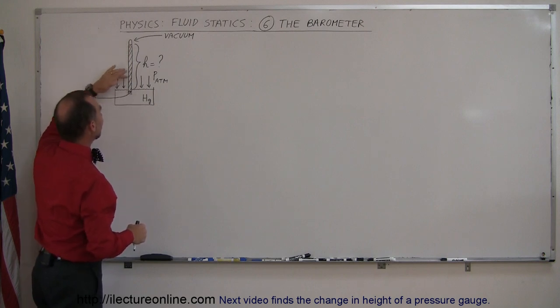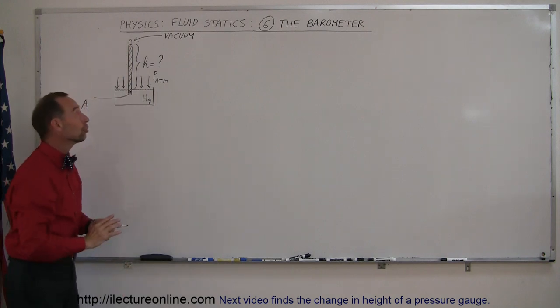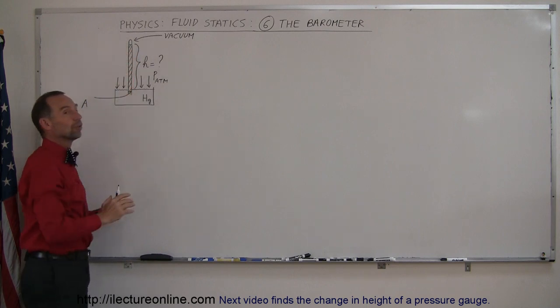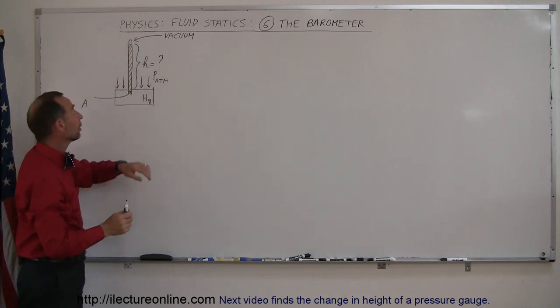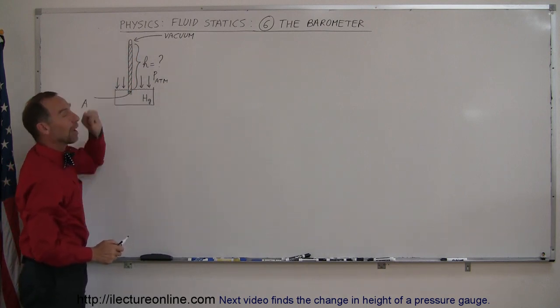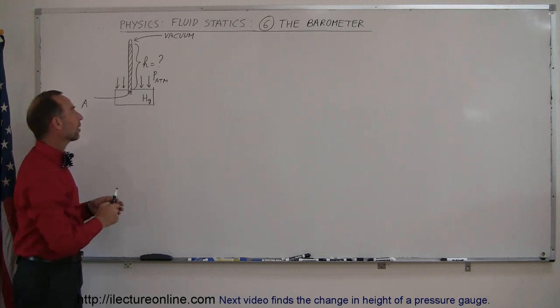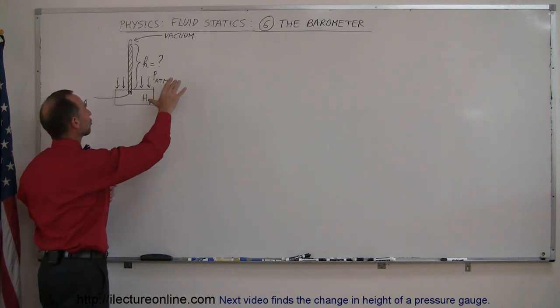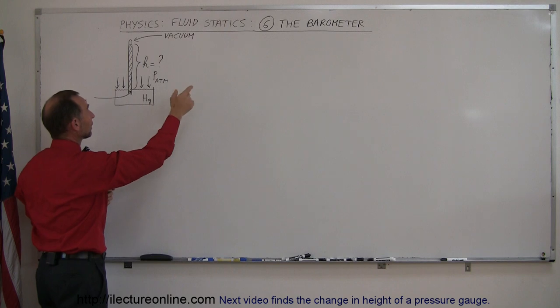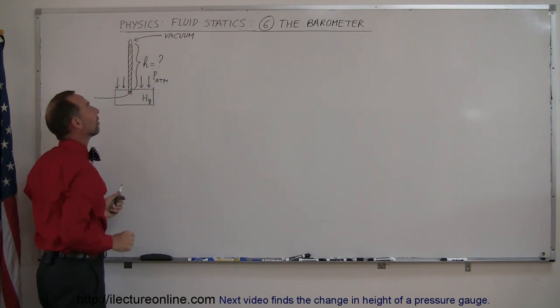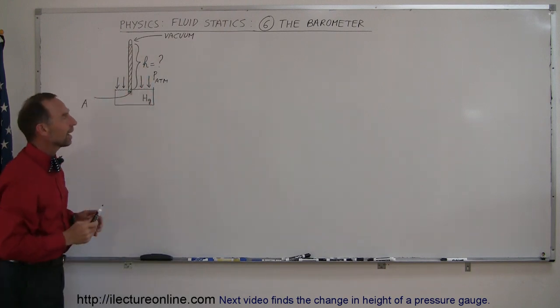And then you'll have what we call a column of mercury inside the tube, and at the very top of the tube there's simply a vacuum. There's no air there, so zero pressure at the very top of the tube. And it turns out that the atmospheric pressure, which is what you're trying to measure, can be determined by the height of this column. And let's see how that works.